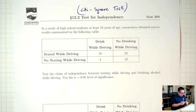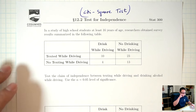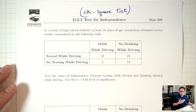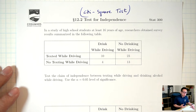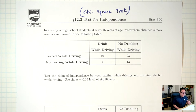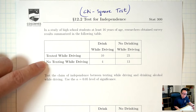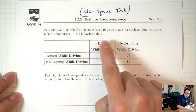So let's take a look at the situation here. In a study of high school students at least 16 years of age, researchers obtain survey results summarized in the following table. This is going to be a chi-square test because the numbers represent counts — how many people are in certain categories. The difference from last time is that we have two sets of categories. We're asking people two things: do you text and drive? Yes or no. And do you drink and drive? Yes or no.